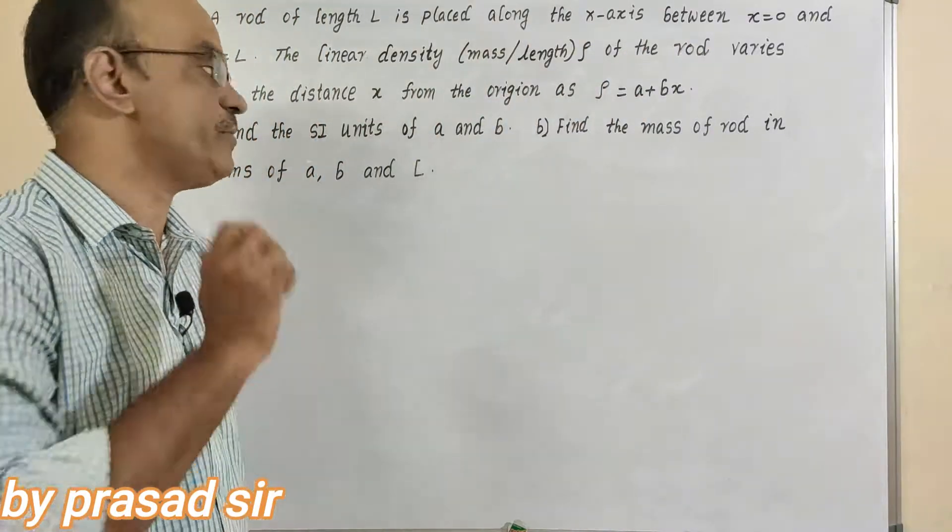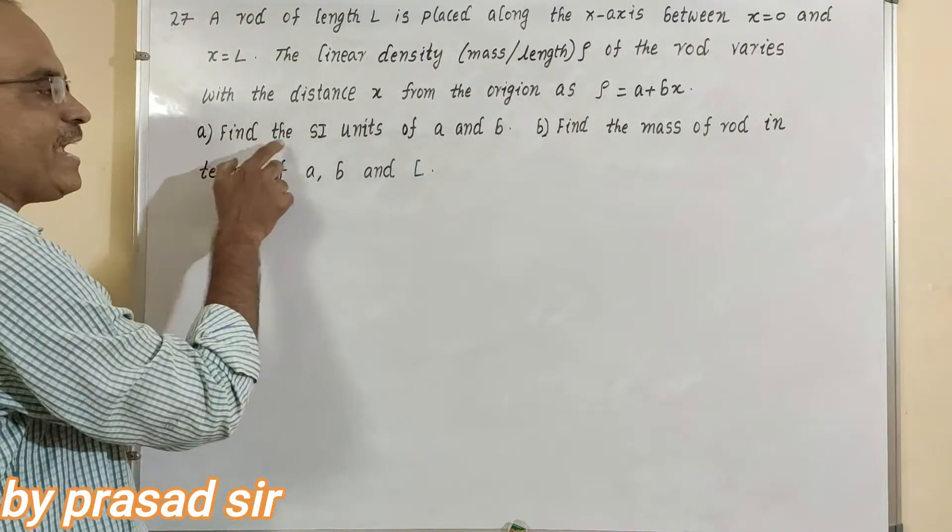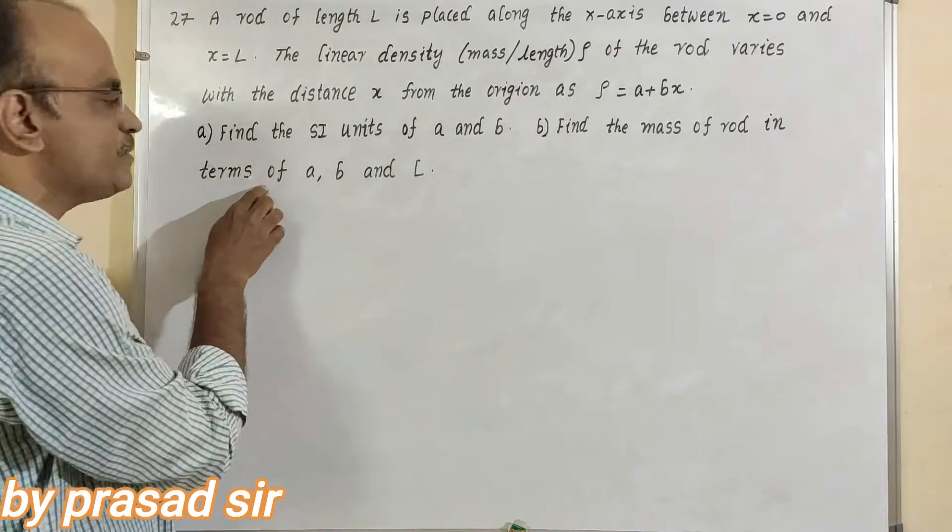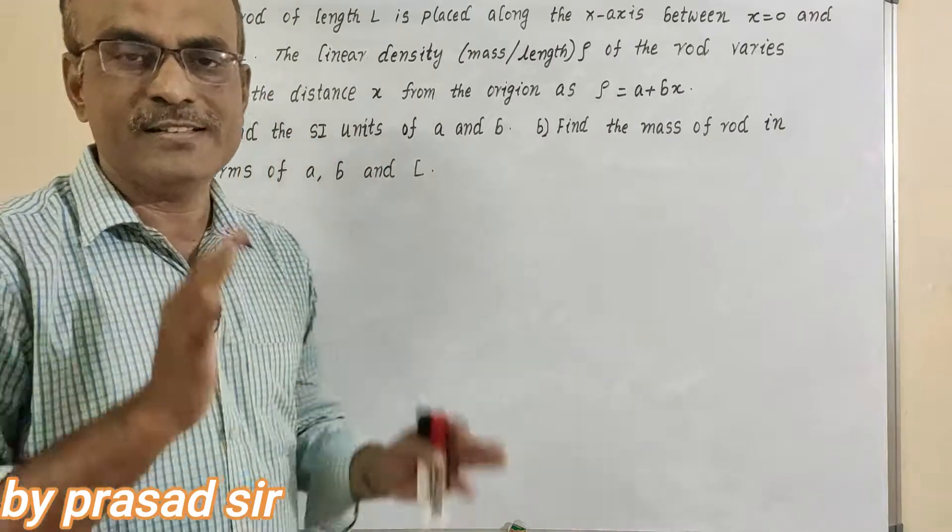Remember that is very important. Now part A, find the SI units of A and B. Part B, find the mass of the rod in terms of A, B and L. These are the requirements.